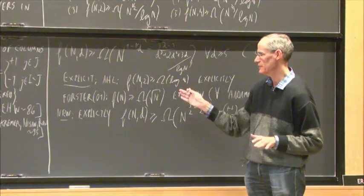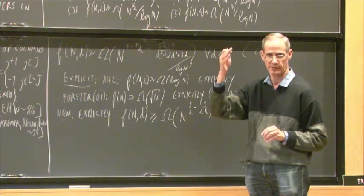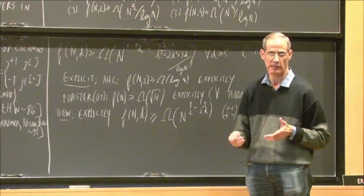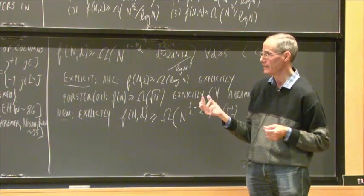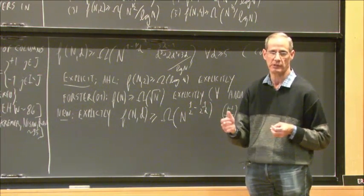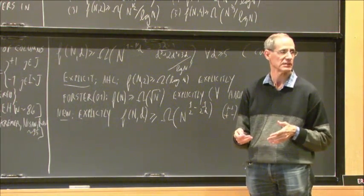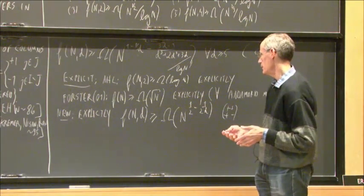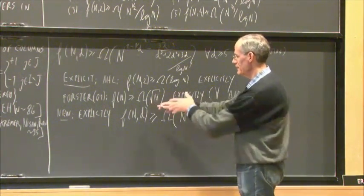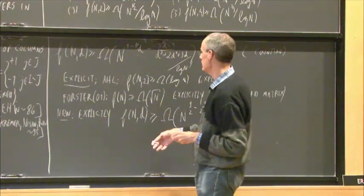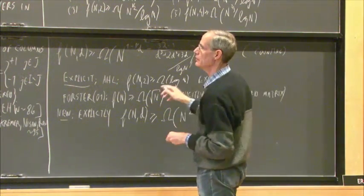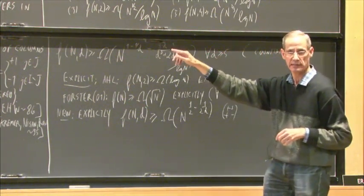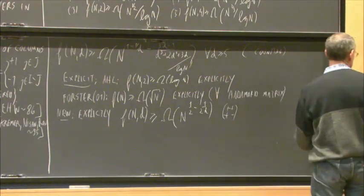The definition of a Hadamard matrix is simply that A times A-transpose equals nI — meaning the rows are orthogonal. It is a ±1 matrix with orthogonal rows. The conjecture is that these exist for any n divisible by 4, and it is known they exist for many values of n. This brings us to the last notion in the title — the spectral gap.